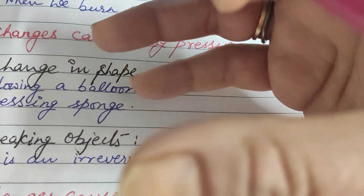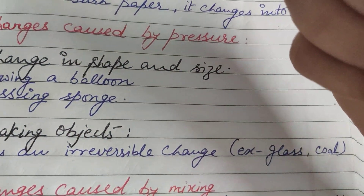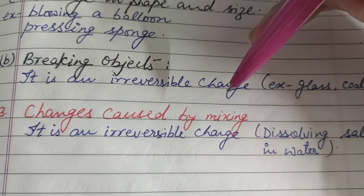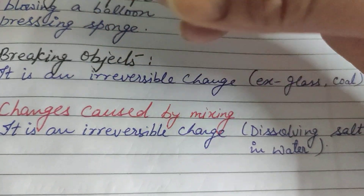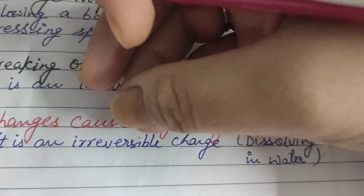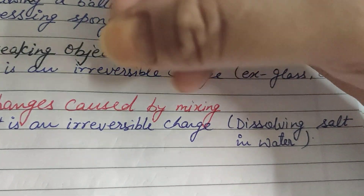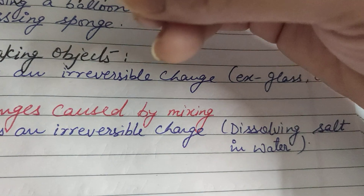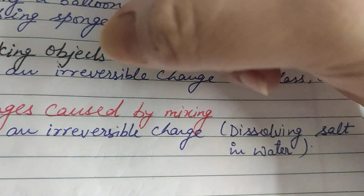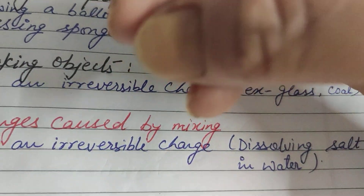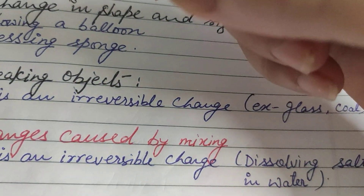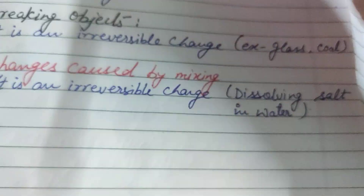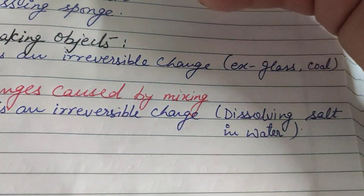These are irreversible changes. Now, the last point of this chapter is changes caused by mixing. Many changes occur due to mixing of substances. For example, dissolving salt in water to obtain a salt solution. In the previous chapter, we discussed how to separate salt from its solution in water, so we can say that it is a reversible change.